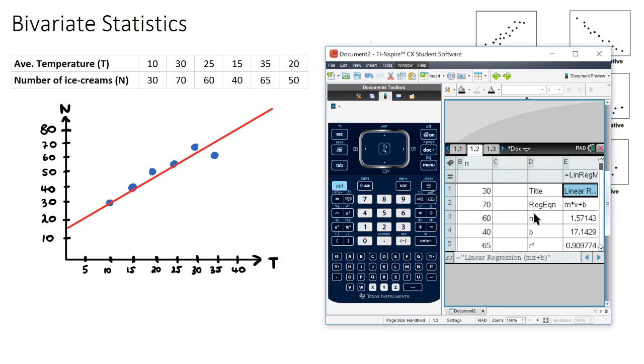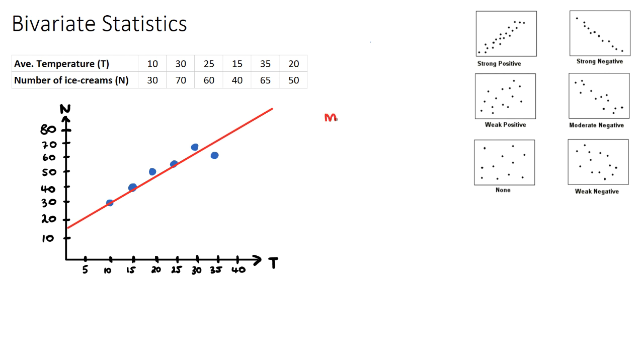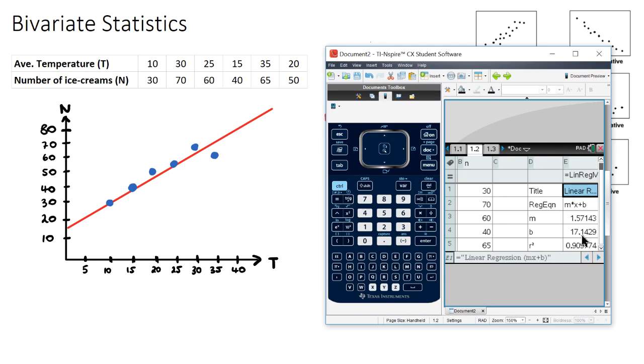Okay, and what then comes out is all of our information. We have a regression equation, mx plus b, where m is 1.57 and b is 17.14. So I'll put all of this in. m is 1.57, so m equals 1.57. Our b value was 17.1.